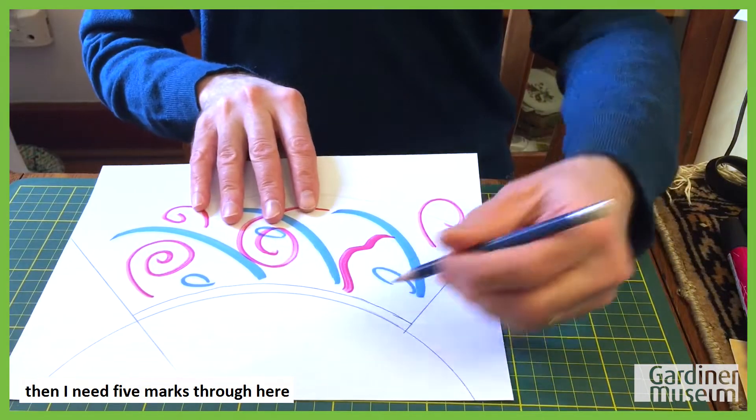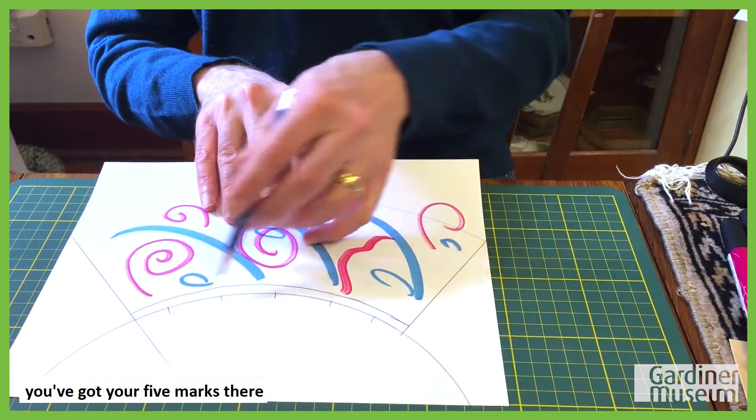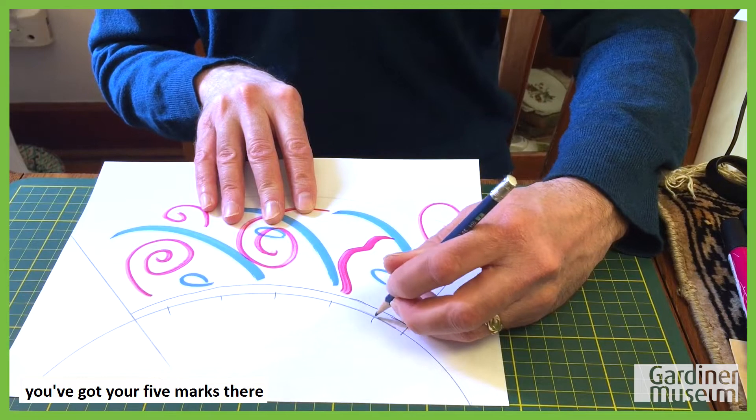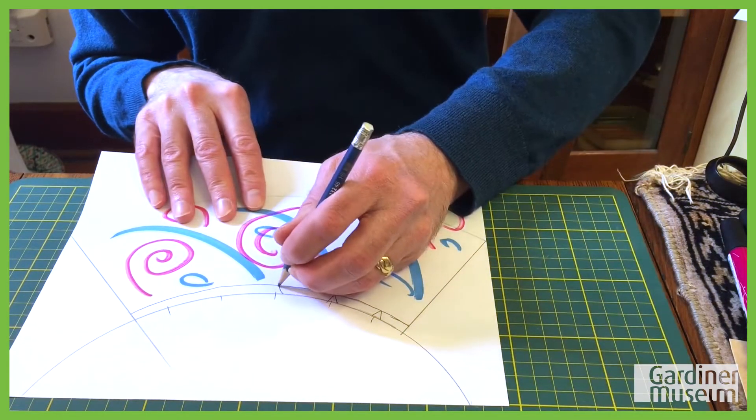Then I need five marks through here. Get in there and get your five marks there. And we're going to cut a little dart out of each one. Let's put the edge on there.